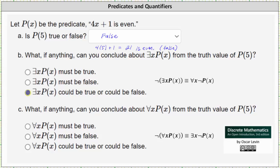For example, if we knew that 1/4 was in the domain of discourse, P of 1/4 would indicate that 4 times 1/4 plus 1 is even, and 4 times 1/4 plus 1 is 1 plus 1 or 2. 2 is even is true, and therefore P of 1/4 would be true. But again, we don't know whether 1/4 is in the domain of discourse, which is why there exists an x such that P of x could be true or could be false.